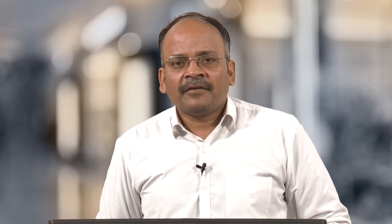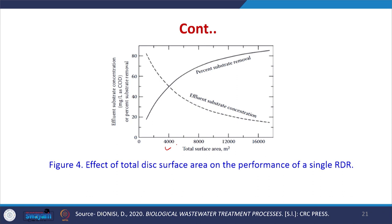An increase in fractional submergence increases the total submerged area, allowing more microorganisms to grow on the disc. It causes the substrate removal rate in the submerged sector to increase, although it also decreases substrate flow through the aerated sector. The net effect is an increase in substrate removal because the submerged sector provides the majority of total substrate removal. Generally, 40% submergence is optimum because microorganisms must also be exposed to oxygen for their growth.